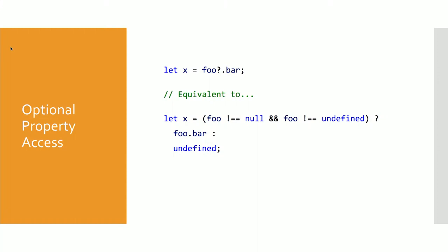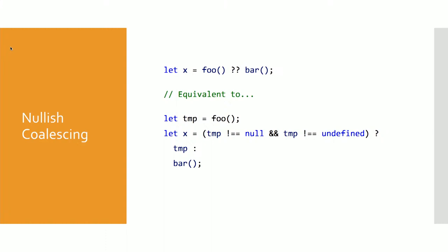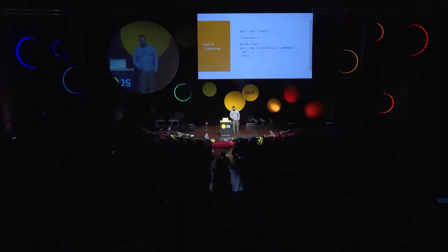In optional chaining, if you have some big configuration object that may or may not have certain properties, using dot to access them causes an annoying problem where if something's missing, it throws an exception — because undefined dot something is a type error. So instead, you can use question mark dot, which only gets the value if you don't have null or undefined. Similarly, nullish coalescing: a lot of people use double bar (or) for defaults, but that's broken because zero or the empty string gets treated as a missing value. The question mark question mark operator just checks for null and undefined, kind of like optional chaining.